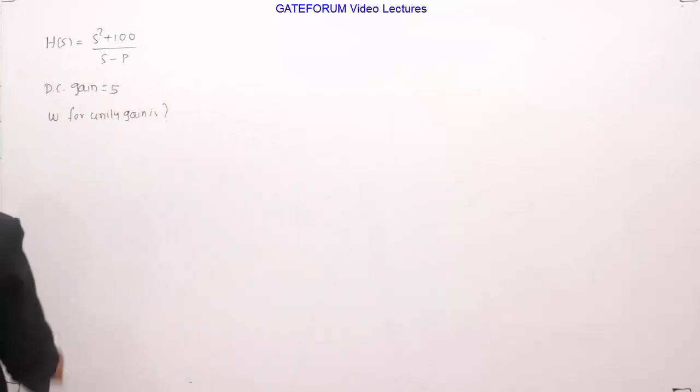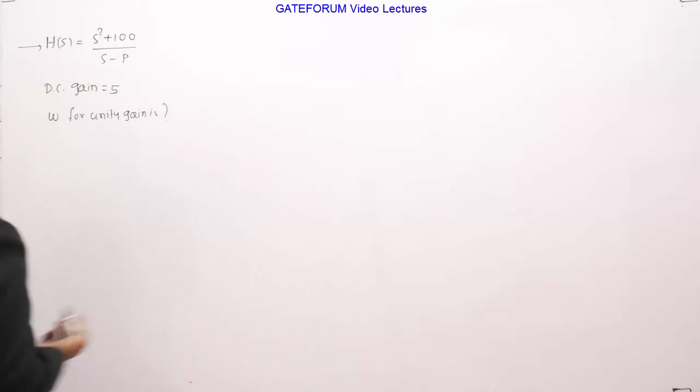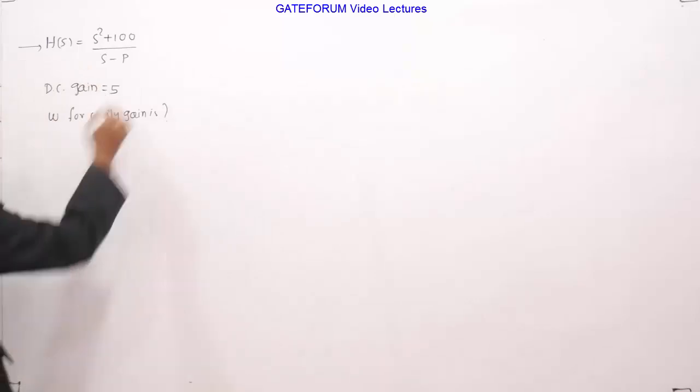It is given this is the transfer function and if DC gain is 5, then what is the value of frequency at which the gain will be unity or 1. This is very simple problem. DC gain is 5, what does this mean?